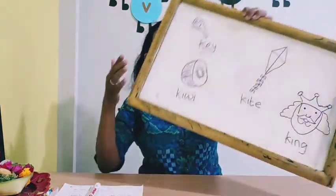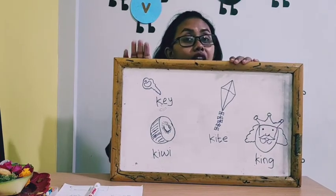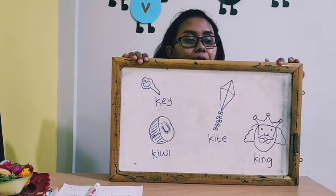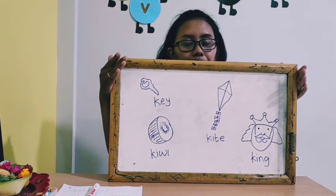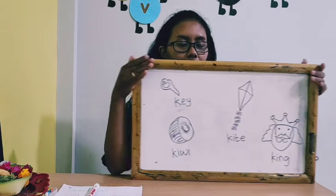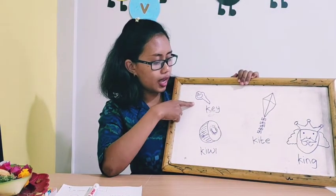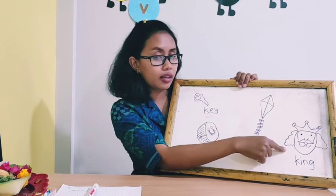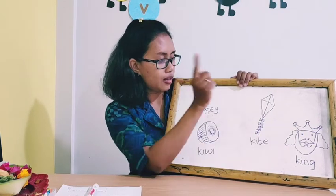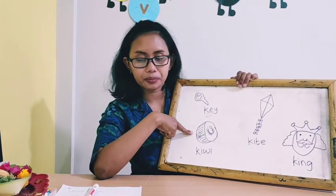Okay, everybody look at my whiteboard. Miss Denny already drew some pictures here. Okay, there are kiwi, kite, king. Kite, king, kiwi.